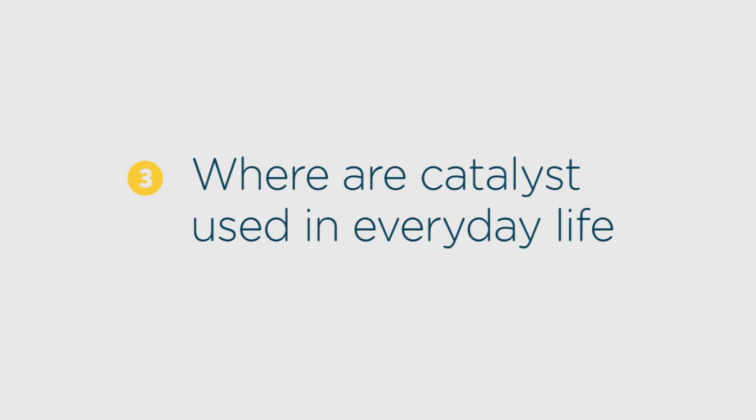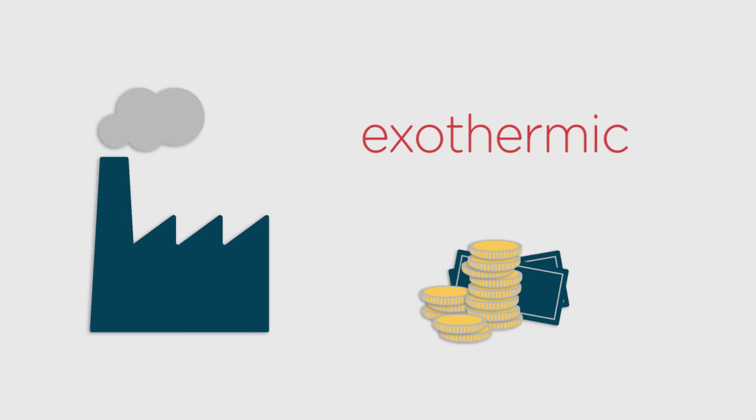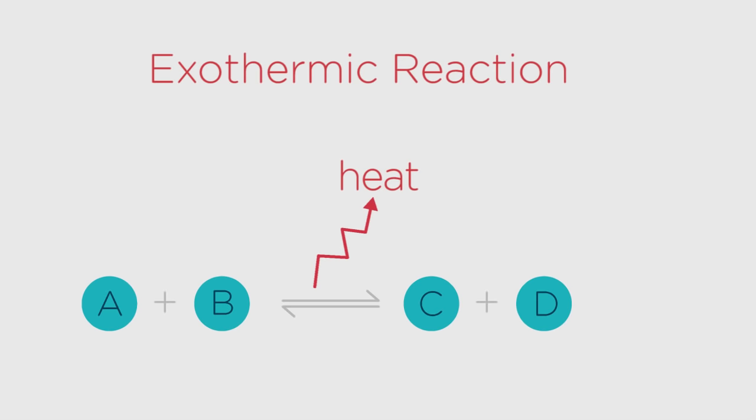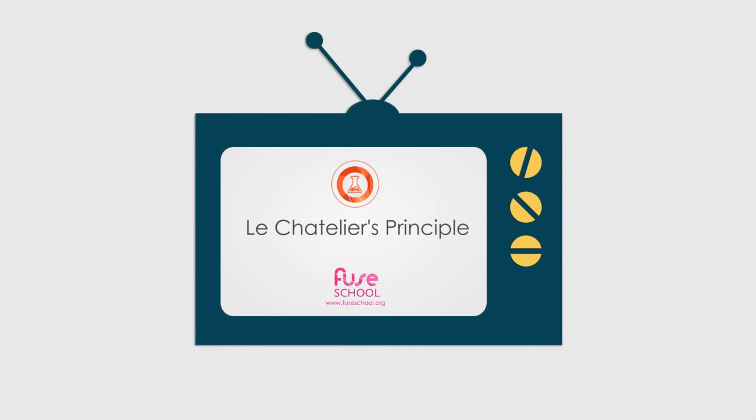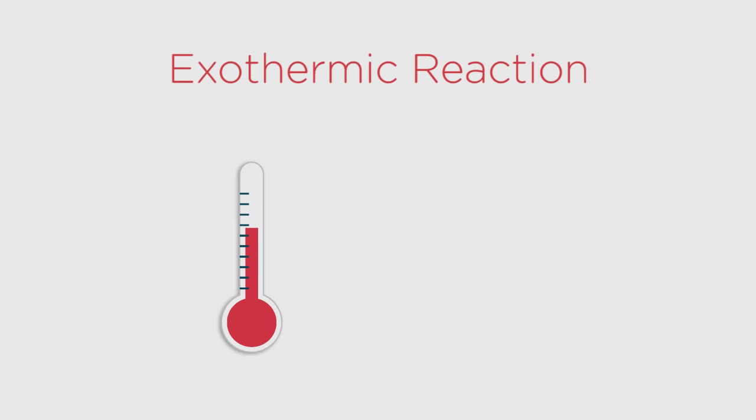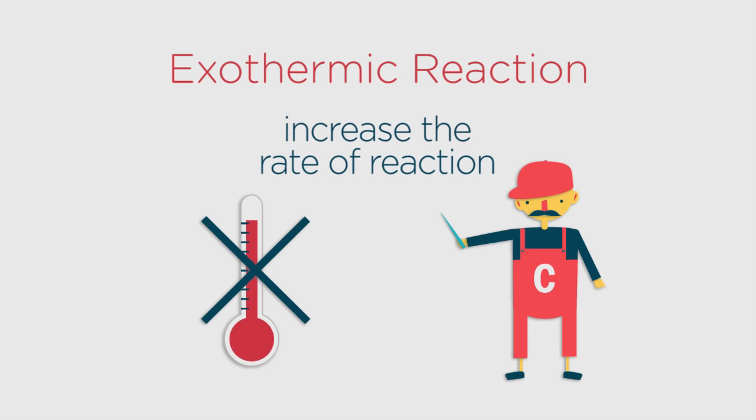Do you know where catalysts are used in everyday life? Most manufacturing processes are exothermic for economic reasons. The heat given out is used to maintain the operating temperature of the reaction. Exothermic reactions cannot run at too high temperatures as the yield will be too low. So as we cannot increase the rate of these exothermic reactions by having the temperatures too high, we use catalysts to increase the rate of reaction.